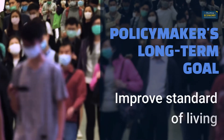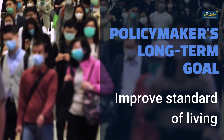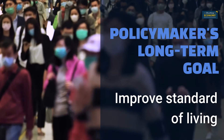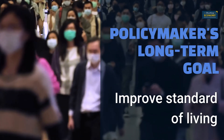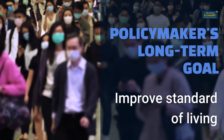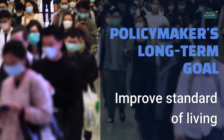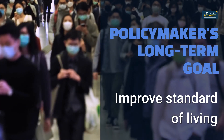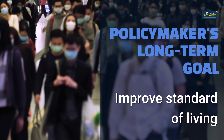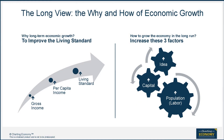Economic policy makers' long-term goal is to improve the country's standard of living and its population's well-being. Without economic growth, the standard of living does not improve, as had been the case in most countries before the Industrial Revolution. So, how do you make the economy grow in the long run? A simple formula for long-term economic growth dictates that you have to increase these three factors: labor, capital, and ideas. That's the job of policy makers.